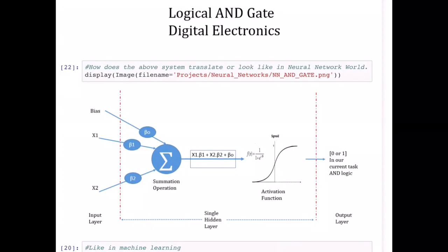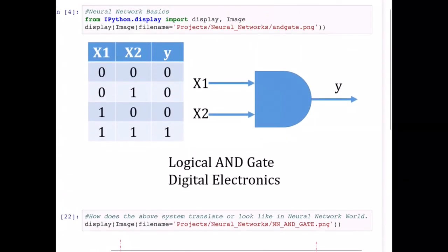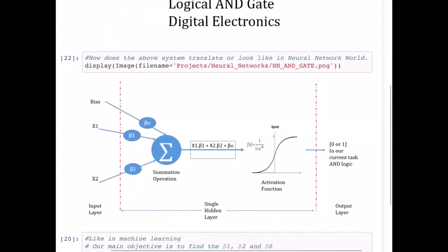Let me zoom into it. You can see on the very leftmost part there are x1 and x2, which are my features from the input data set. In our upcoming projects, we'll also see how this x1 and x2 are prepared to be fed into the neural network, and then there is a bias. These are my input layer.